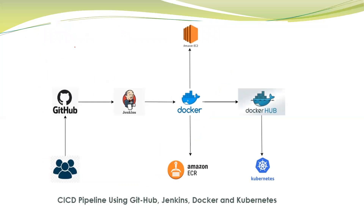You can see here the flow for all four demos. The user checks in code to GitHub, Jenkins takes the code from GitHub, and using Maven it creates a build and generates a JAR file based on the code check-in. After that it calls the Dockerfile, creates the Docker image, and that Docker image is pushed to Docker Hub. From Docker Hub, it is pulled by Kubernetes services and Kubernetes creates the deployment set and services, which are then accessible by the end user.